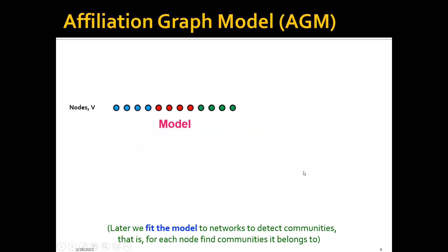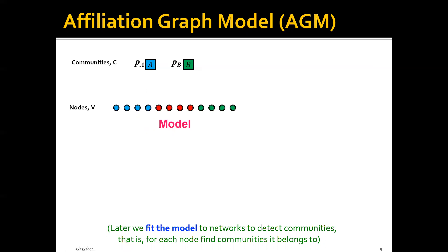One idea is to use the affiliation graph model. In this model, we have several parameters. The first subset of parameters is the set of nodes, and we also have the set of communities — in this case, two communities. For each community, we have a probability: P_A and P_B. P_A is the probability that if two nodes both belong to community A, they will have an edge between them.